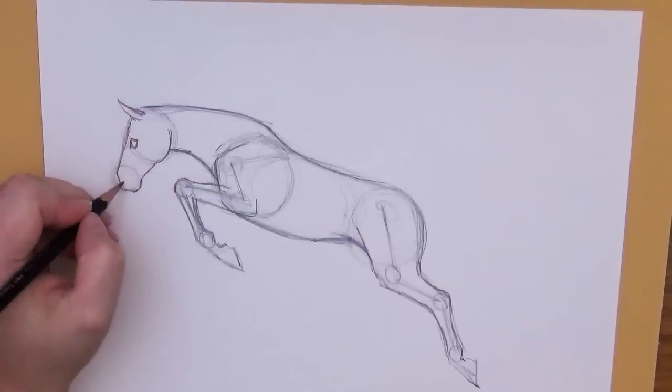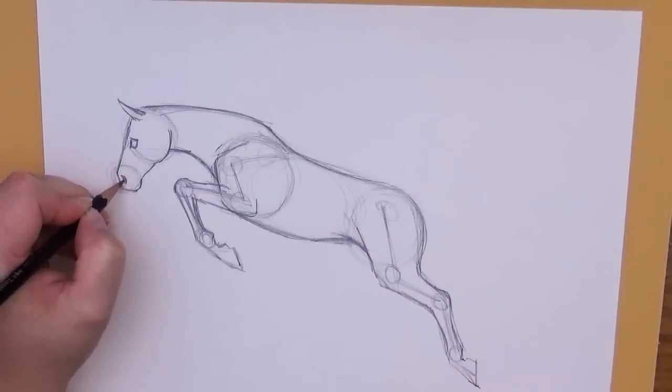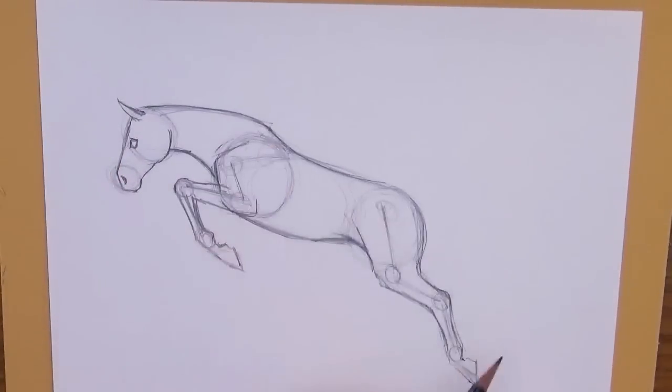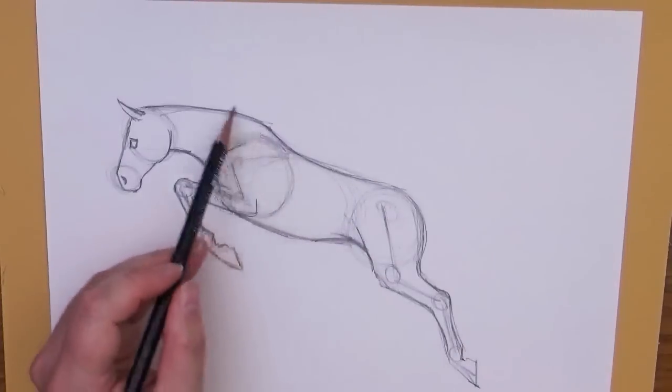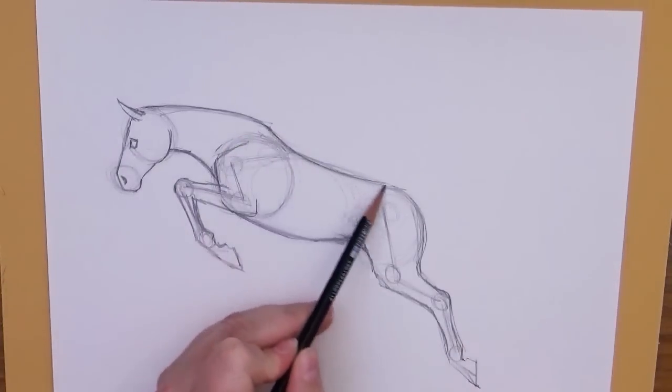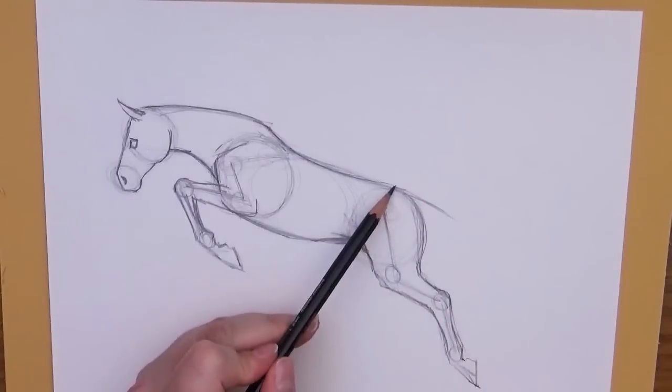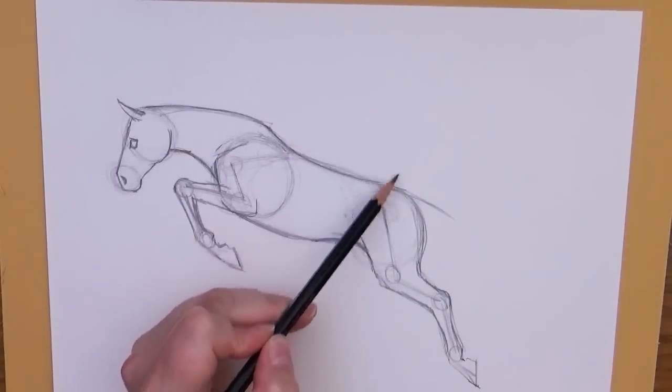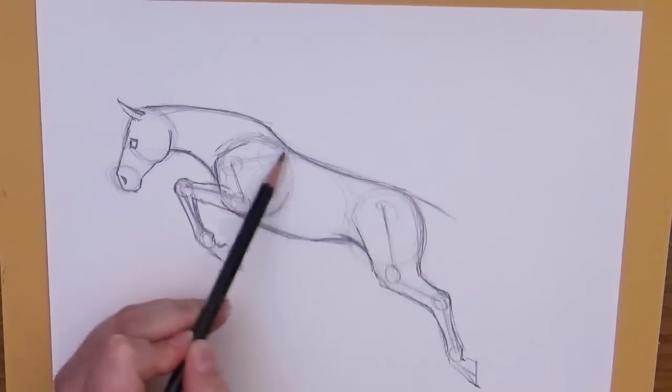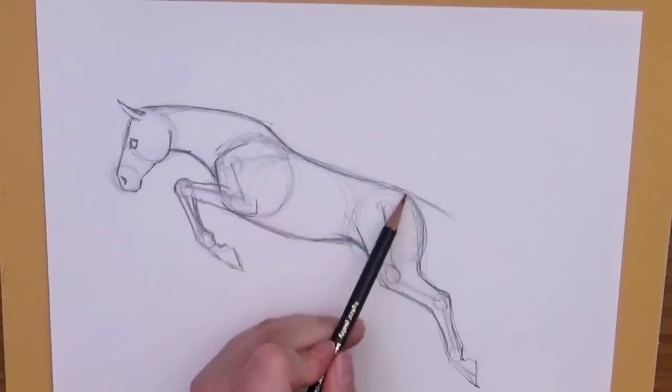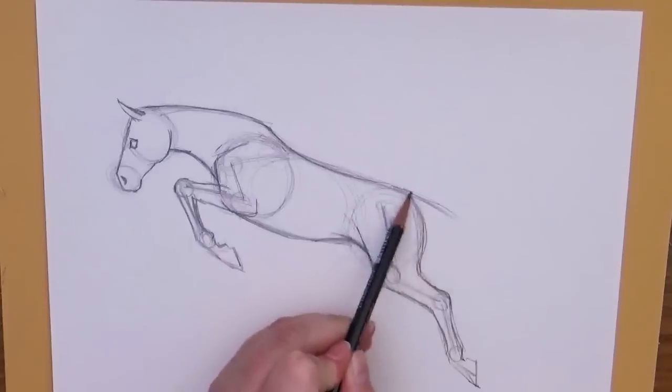The last thing we want to put in here is his tail, which his tail is an extension of actual backbone, comes right out here like this. Now some horses when they jump, they'll really carry their tail up really high. Some of them just kind of let it go with the flow, so you just have to decide what your horse is going to do with his tail.